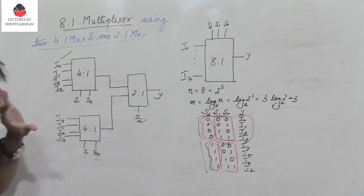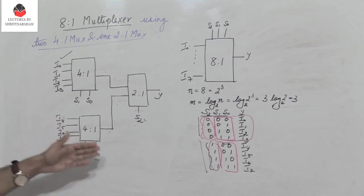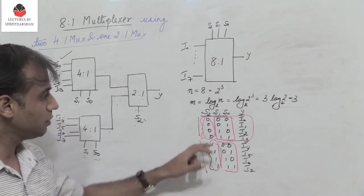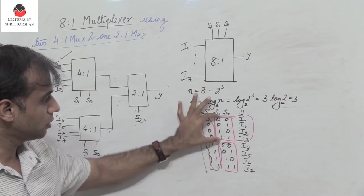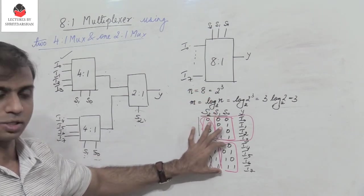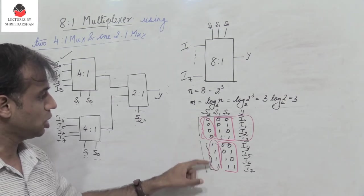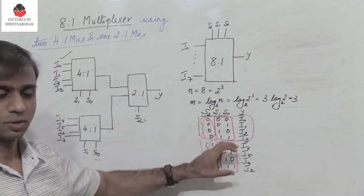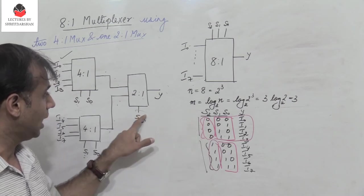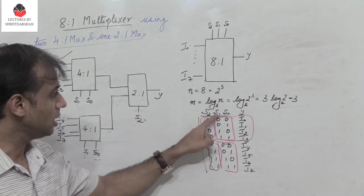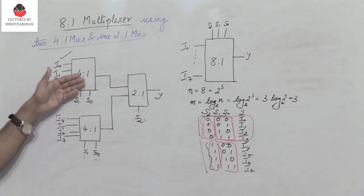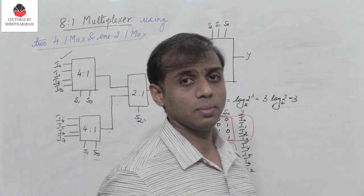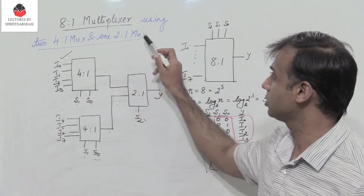To summarize the design approach: first write the truth table and identify the select inputs. We find that S0 and S1 repeat for the first four combinations and the next four combinations, while S2 is 0 for the first four and 1 for the second four. Therefore, S2 becomes the select line for the 2-to-1 MUX, whereas S1 and S0 become the select lines for both 4-to-1 MUXes.